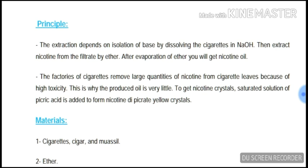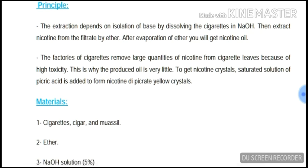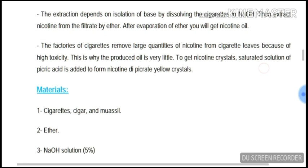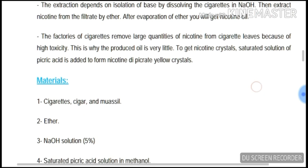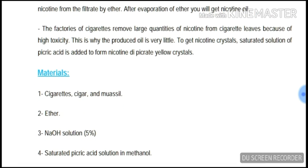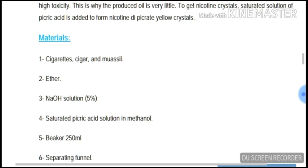The factories of cigarettes remove large quantities of nicotine from the tobacco leaves because of high toxicity, which is why the produced oil is very little. To get nicotine crystals, a saturated solution of picric acid is added to form nicotine picrate yellow crystals.